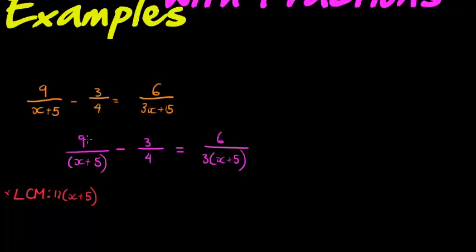So I'm going to multiply with the LCM, which means that the first term is going to get multiplied with 12(X plus 5), the second one is going to multiply with 12(X plus 5), and as well as the last one gets multiplied with 12(X plus 5).